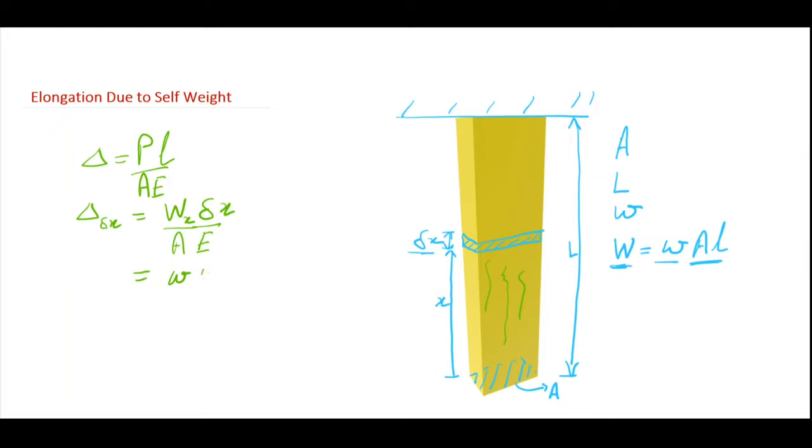So this is the value of Wx. Wx is equal to weight per unit volume times the volume of the bar below the delta x section. So this much portion of the bar will have the weight Wx, so its volume is area of cross section into height. So I can write here w A x.